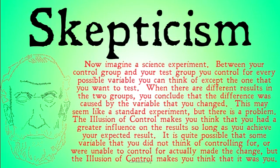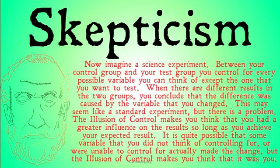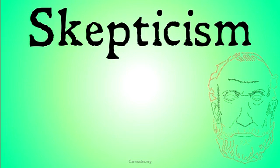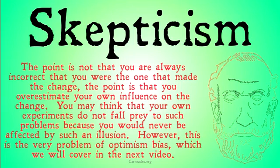This isn't to say that all scientific experiments are flawed because you will always think you are the one affecting it when you're never the one affecting it. Quite often, probably, the variable change may be what actually makes the difference. The problem is that you are overestimating the influence that your change had and underestimating the possibility that something else changed it when the experiment turns out in your favor, and vice versa when it turns out against your hypothesis. The point is not that you were always incorrect that you were the one that made the change — the point is that you overestimate your own influence on the change.